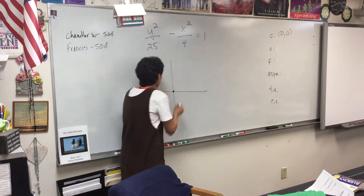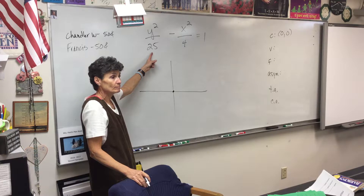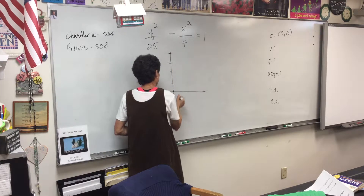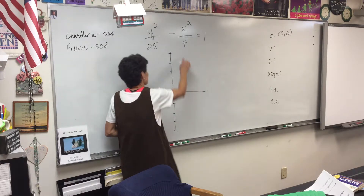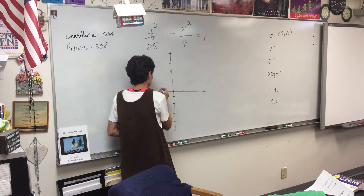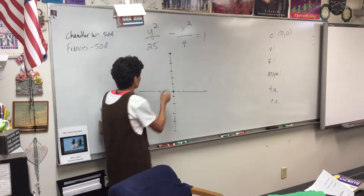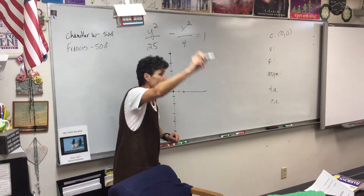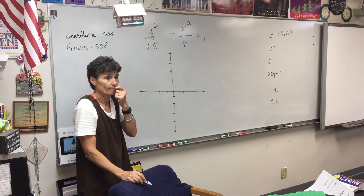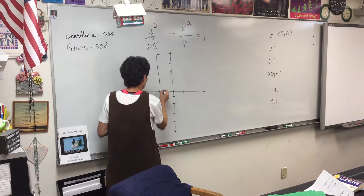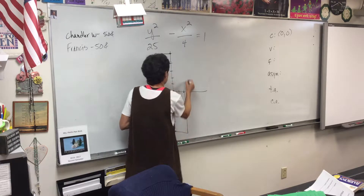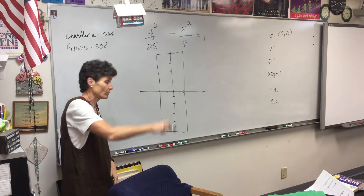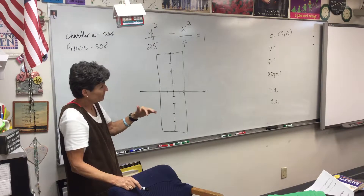So here's my center. That 25 — count up and down 5: one, two, three, four, five. And that 4 — count sideways 2. Now what do I do with these four points? This is a hyperbola — don't connect them with an oval. Connect them with a rectangle. Make a rectangle through those four points. Those four points are the same points you would connect with the oval, but it's a hyperbola, so we're making a rectangle.